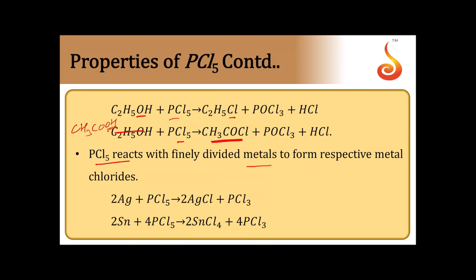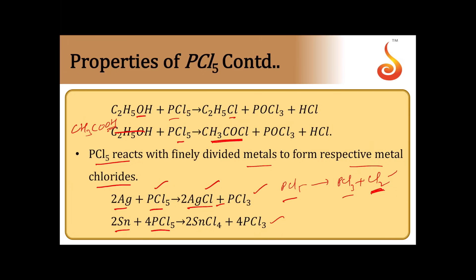PCl5 reacts with finely divided metals to form the corresponding metal chlorides. When PCl5 is heated, it gives rise to PCl3 and Cl2; the Cl2 then attacks the metals and forms the corresponding metal halides. For example, silver plus PCl5 gives AgCl, and tin plus PCl5 gives SnCl4, with PCl3 as the byproduct in both cases.